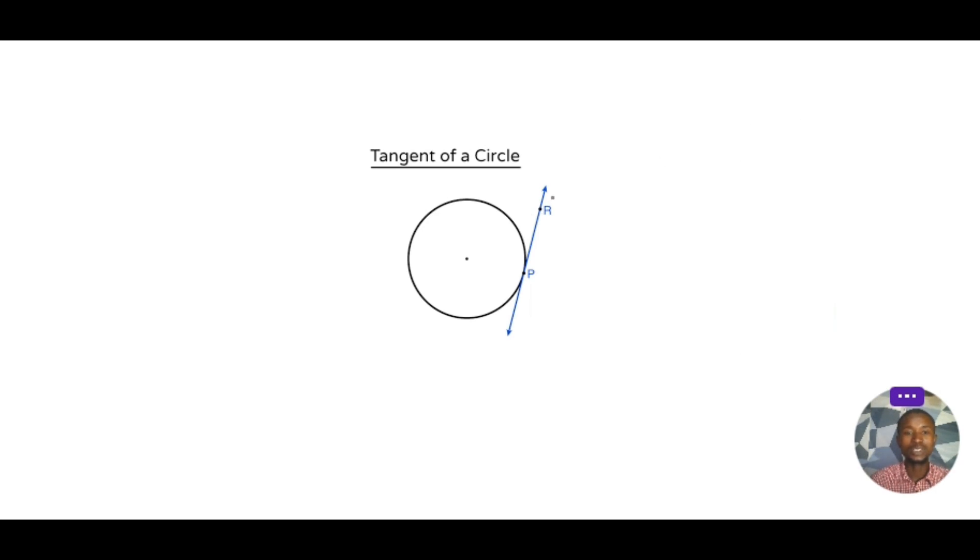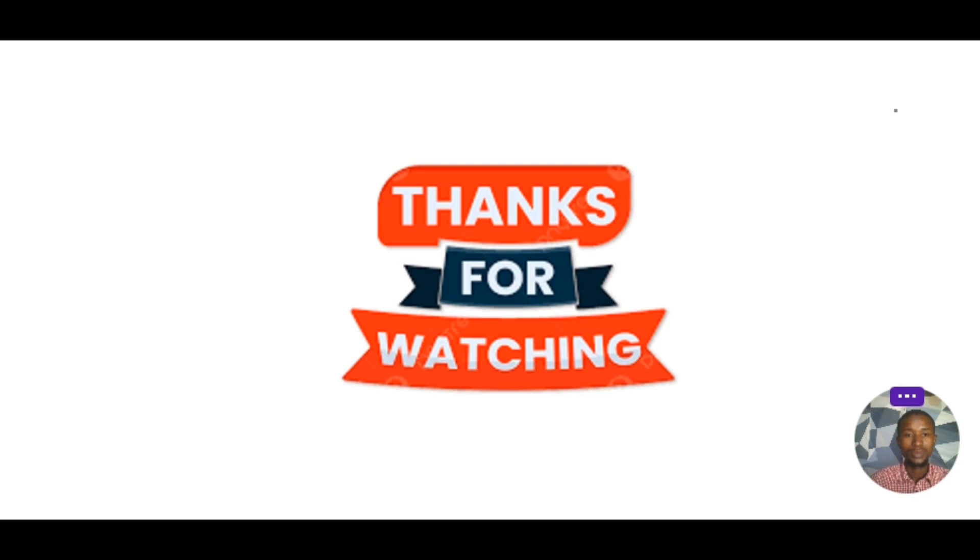So tangent. The tangent is a line touching the circumference of the circle. This line touching the circumference of the circle is what we refer to as the tangent of the circle. So I thank you for watching. Bye for now, see my next video.